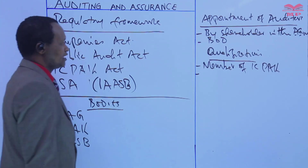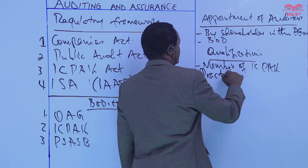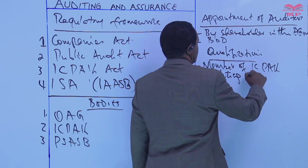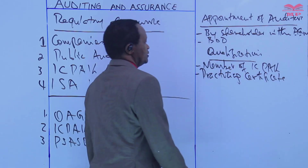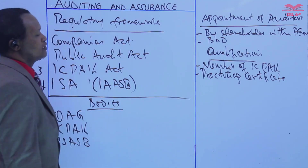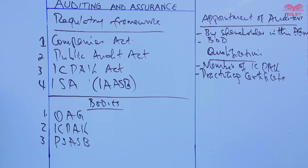Then one must have a practicing certificate. To be eligible for appointment, one has to have a practicing certificate. The auditor must hold a valid practicing certificate that is issued by the Institute of Certified Public Accountants of Kenya, demonstrating their competence and adherence to professional standards.